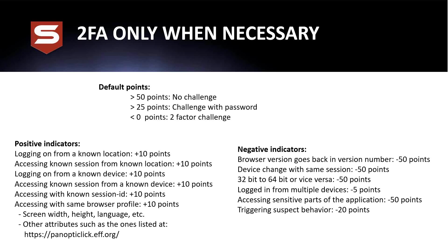Facebook, Duo Security, and modern 2FA implementations use positive and negative indicators. They only challenge you with a 2FA code if you have enough negative signals — if you have enough positive indicators like known browser profile, known geolocation, they won't challenge you again with a second factor.